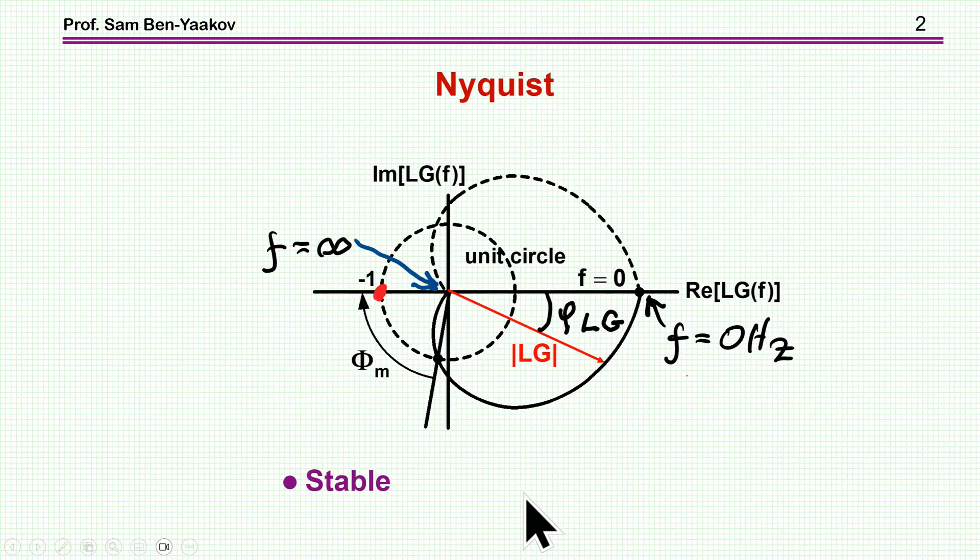So we are talking about stability and the effect of sampling delay on stability. Now the best way to understand stability is through the Nyquist plot. I'm showing here the imaginary axis, the real axis of the loop gain of a system. This is the vector, this is the amplitude, this is the phase.